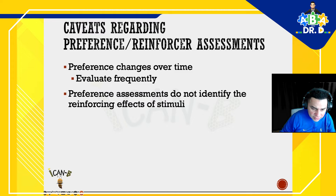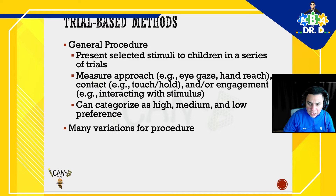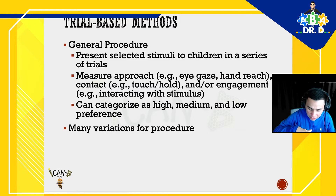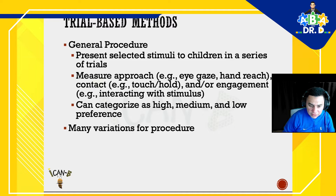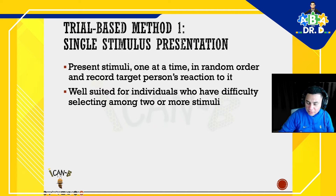For trial-based methods, the general procedure is to present selected stimuli to the child in a series of trials. We measure approach behaviors such as eye gaze, hand reach, contact, and engagement — whether they interact with the stimulus. Items can be categorized as high, medium, or low preference. We want to know how preferred each item is for the individual in that moment. There are many variations of the procedure.